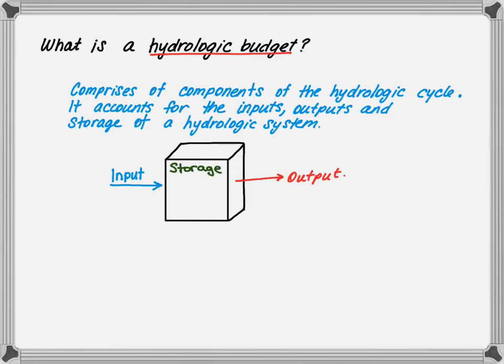All hydrologic systems are comprised of components of the hydrologic cycle. Remember, a hydrologic cycle is composed of precipitation, evaporation, transpiration, infiltration, various types of surface and subsurface runoff, and storage. It accounts for the inputs, outputs, and storage of a hydrologic system, as shown in this example.